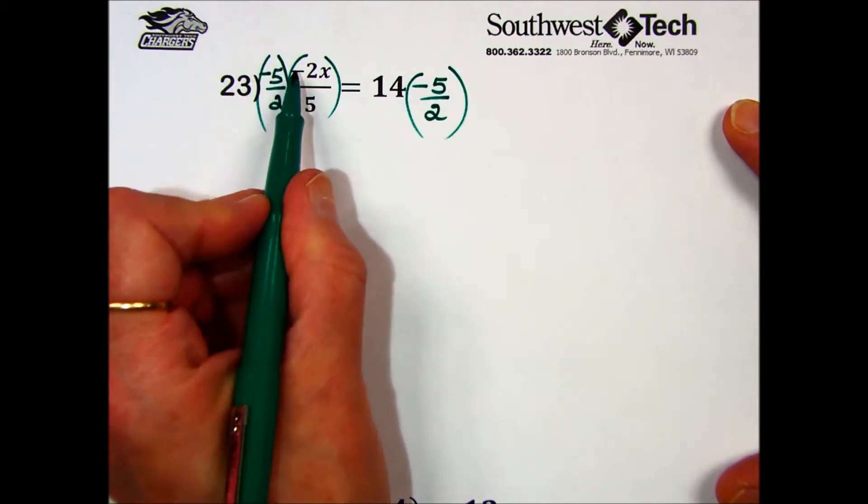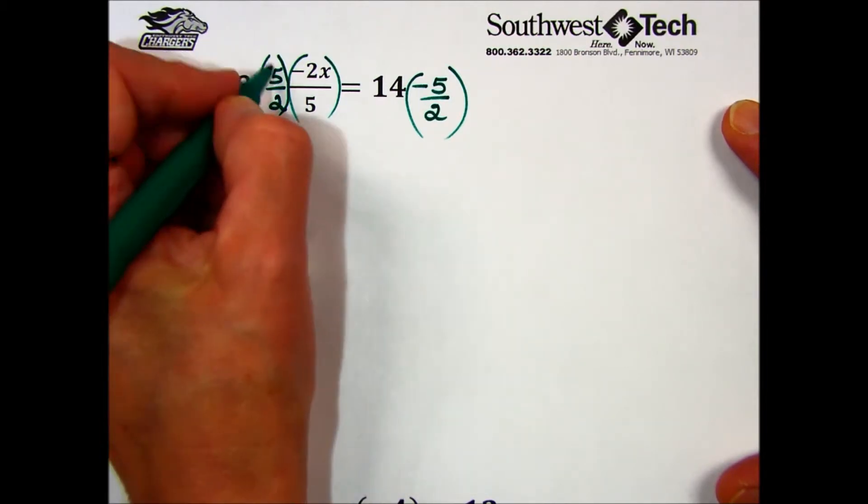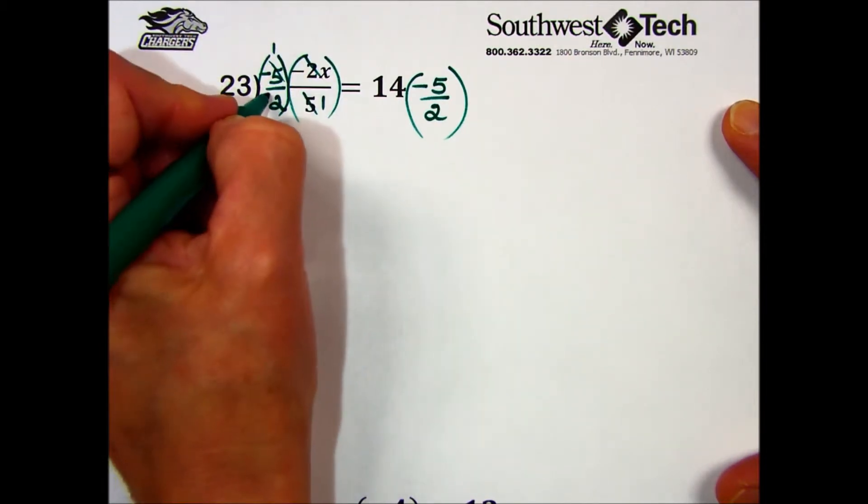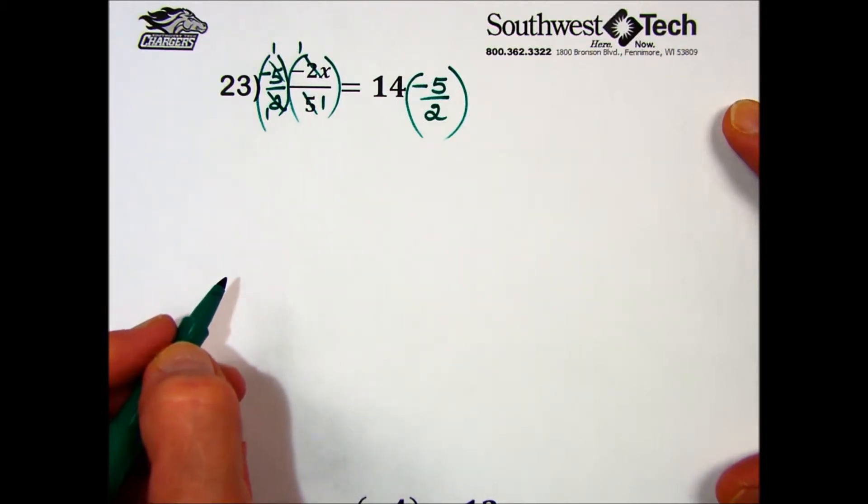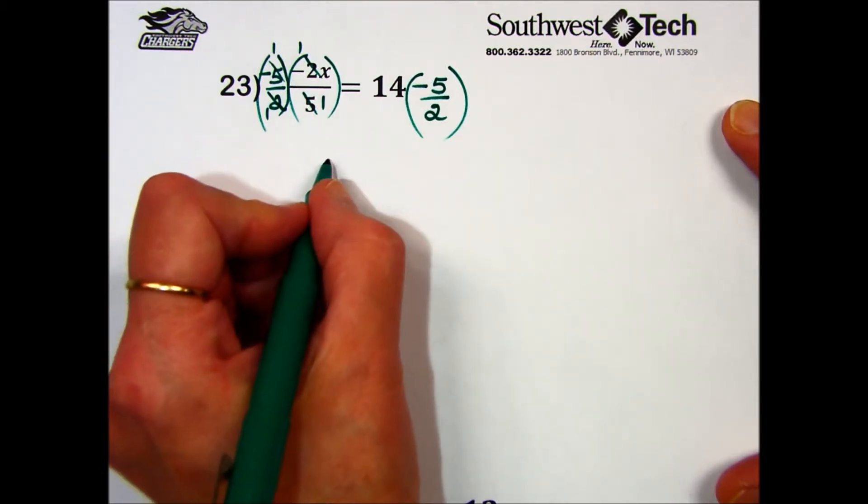As I previously said, a negative times a negative is positive. The 5 in the numerator cancels out the 5 in the denominator, leaving a 1. The 2 in the numerator and the 2 in the denominator cancel out, leaving 1. 1 times x is x.